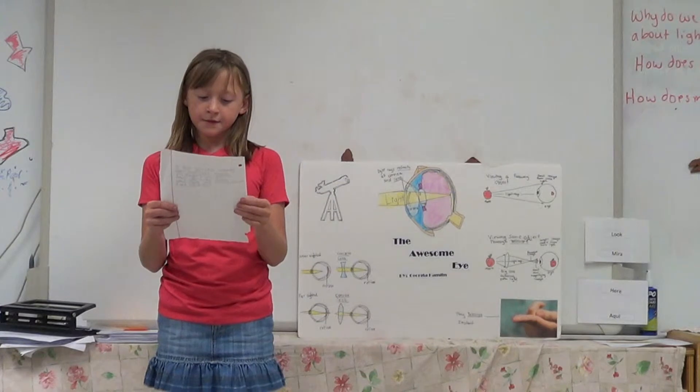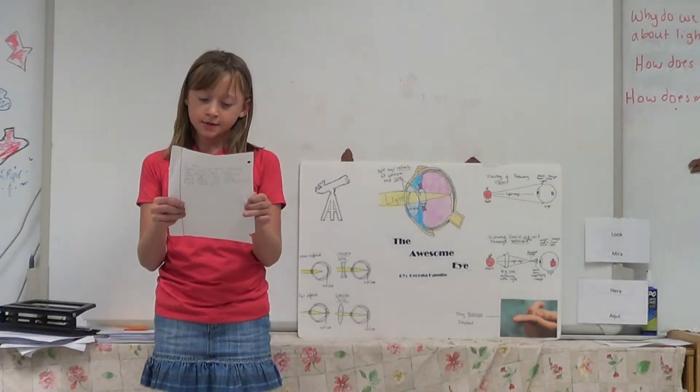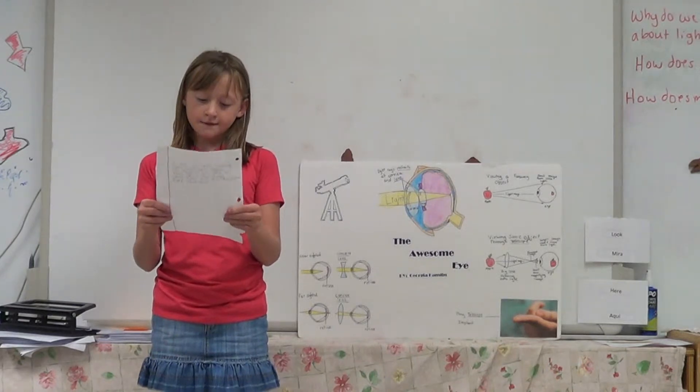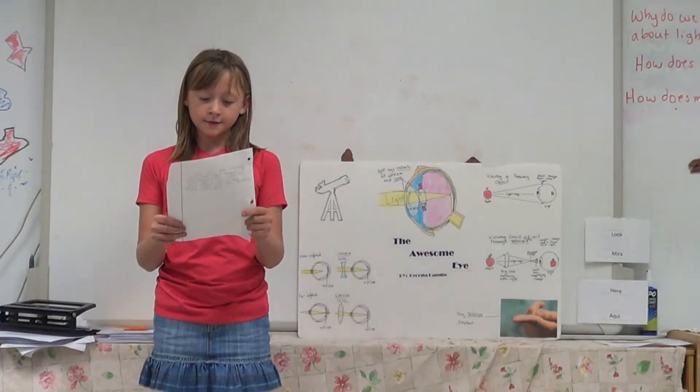A concave lens outside the eye corrects nearsighted vision. Concave is to dip inward. A convex lens that is rounded corrects farsighted vision.